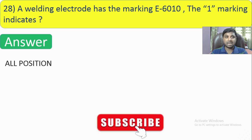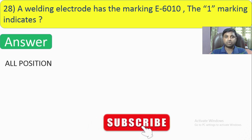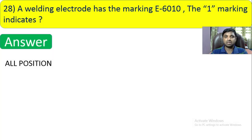Question number 28: A welding electrode has the marking E6010. What does the '1' indicate? E means electrode, 60 represents 60,000 PSI tensile strength, and '1' means all positions. So '1' means all position.